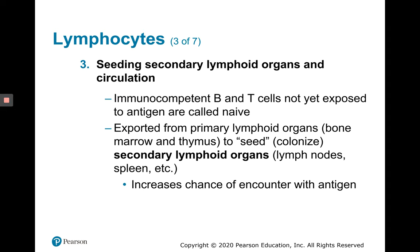After education, mature immunocompetent B and T lymphocytes that have not yet been exposed to their specific antigens — technically naive — travel to secondary lymphoid organs. This movement is called seeding or colonizing the secondary lymphoid organs. Secondary lymphoid organs include lymph nodes and the spleen, among others. Seeding increases the chance of encounter with the antigen by these naive lymphocytes.